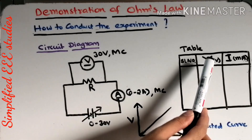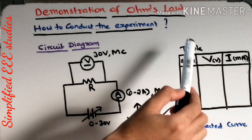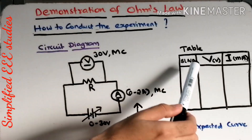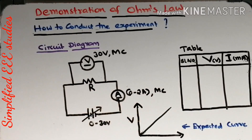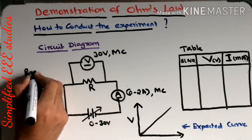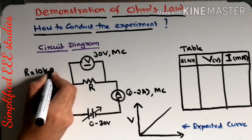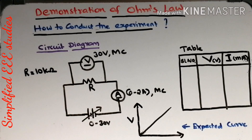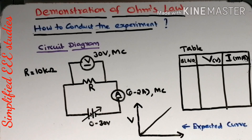Thereafter, frame a table with serial number as the first column, voltage as the second column, and current in milliamperes as the third column. Now finalize the value of resistance — keep it a constant value. The resistance value can be 10 kilohm or 5 kilohm. I will be taking R equal to 10 kilohm and keeping it constant.